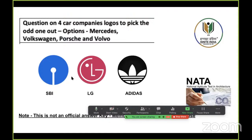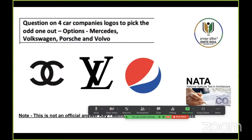You should start visualizing these things — it's very important and it's all around you. When you are traveling, start noticing logos on products, outside banks, on restaurants. Even the Council of Architecture has a logo, NATA has a logo, and Ignite India has a logo. Start being a creative person, start observing and learning. Can you identify which brands these logos belong to? You can type your answers here.